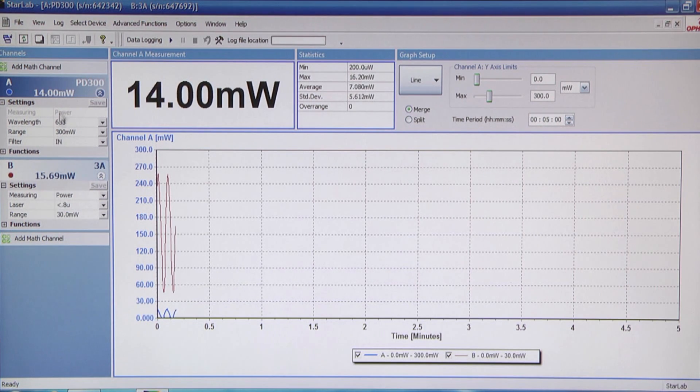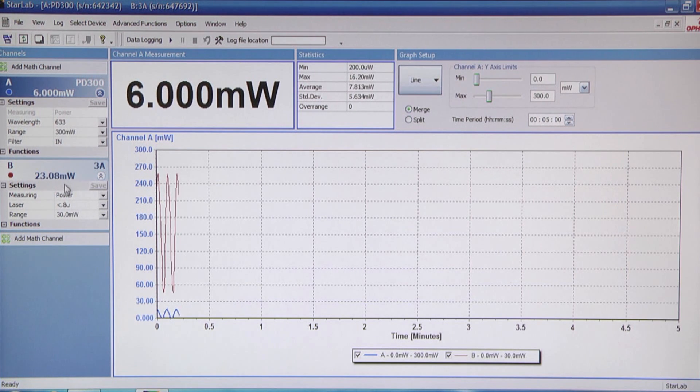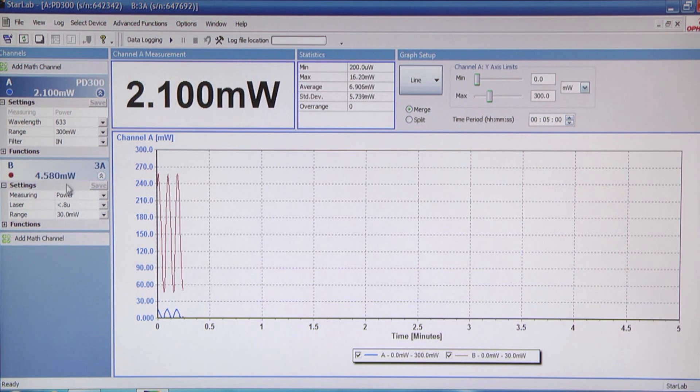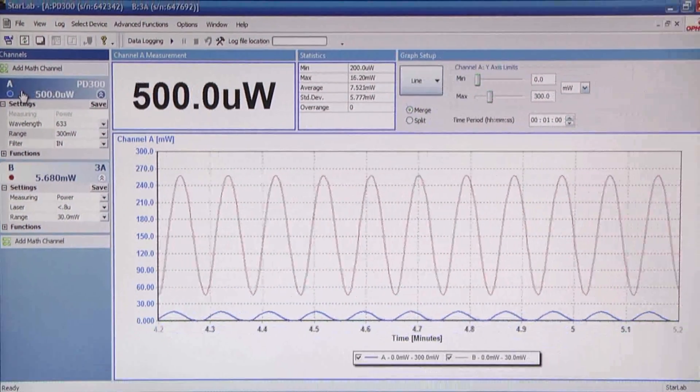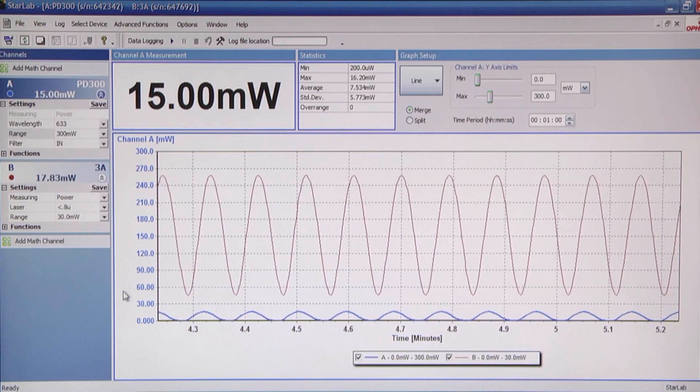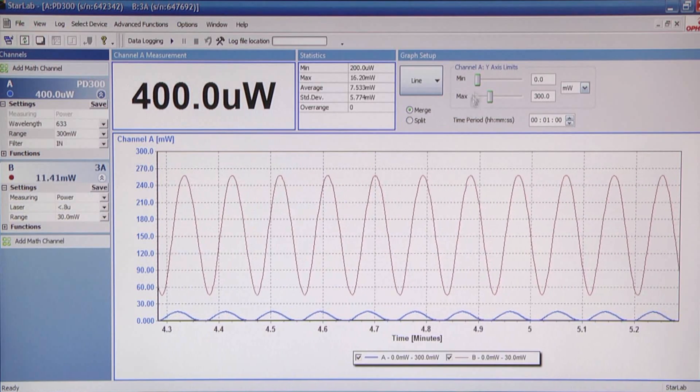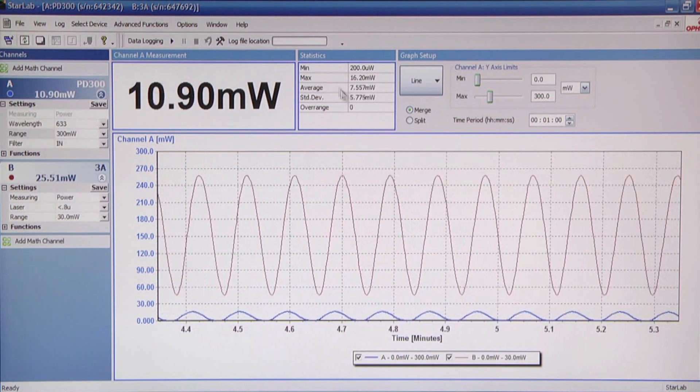As you can see, there's now a channel box for both sensors. We now adjust the setup for each channel at a time. First we'll click on A to focus on that channel. Note that the y-axis values, the graph setup area, and the statistics now all pertain to channel A.